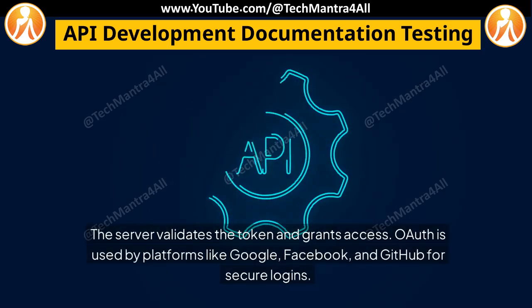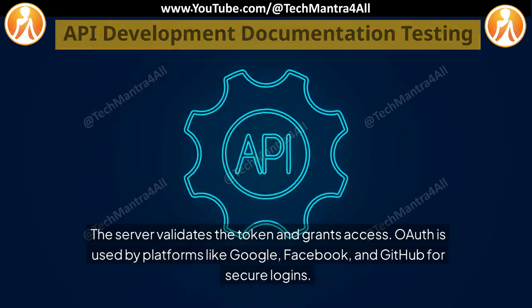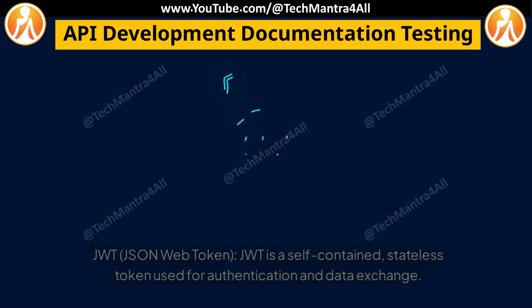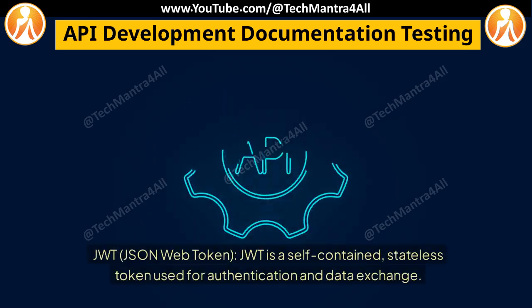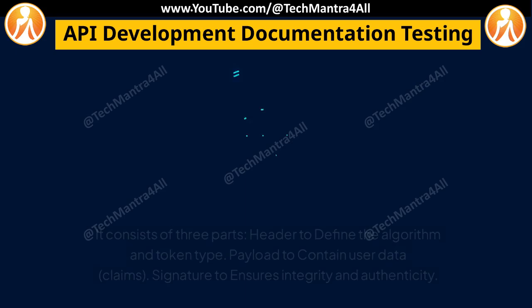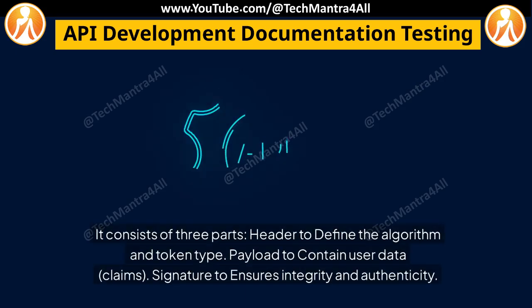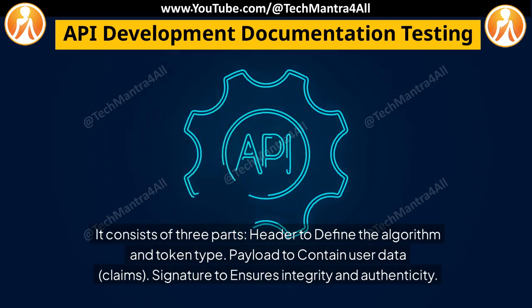OAuth is used by platforms like Google, Facebook, and GitHub for secure logins. JWT, or JSON Web Token, is a self-contained, stateless token used for authentication and data exchange. It consists of three parts: a header to define the algorithm and token type, a payload to contain user data and claims.